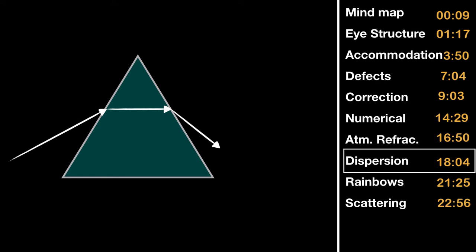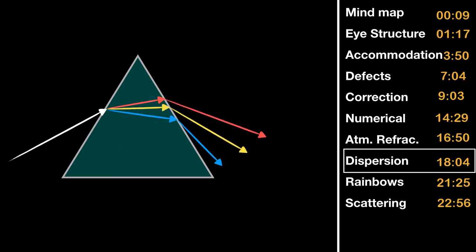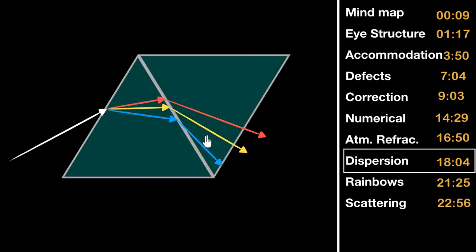So how does a prism give us colors? First, people thought the prism was magically creating colors. But Newton argued that white light already had the colors in it — the prism was just splitting them. Different colors bend by different amounts: red bends the least and blue or violet bends the most. To prove his point, Newton placed a second similar prism, inverted, and observed that white light emerged out.